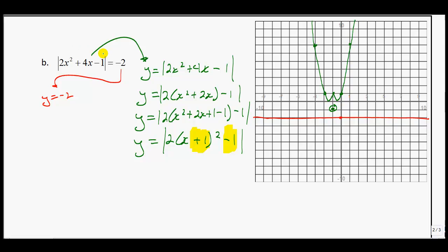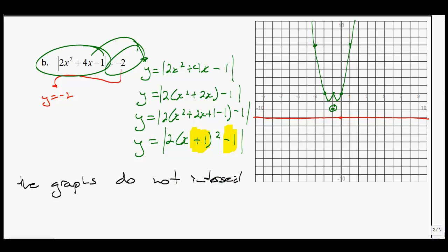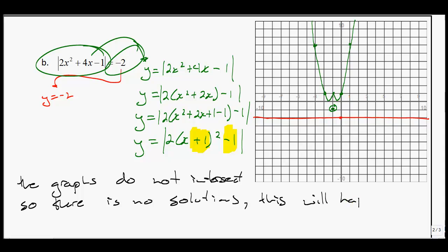We're trying to see where this graph intersects with the line y equals negative 2. We see that the graphs do not intersect, so there are no solutions. In general, this happens when the value that the absolute value equation is set equal to is less than 0. As soon as I saw this was equal to negative 2, I knew there would be no solutions.